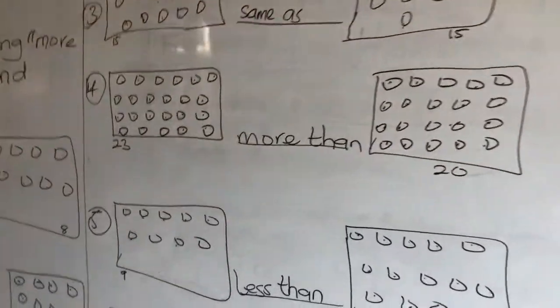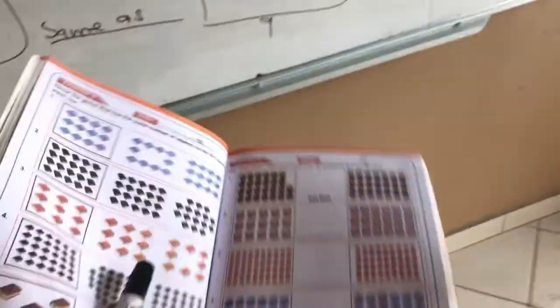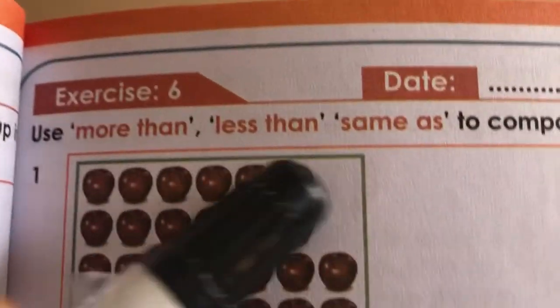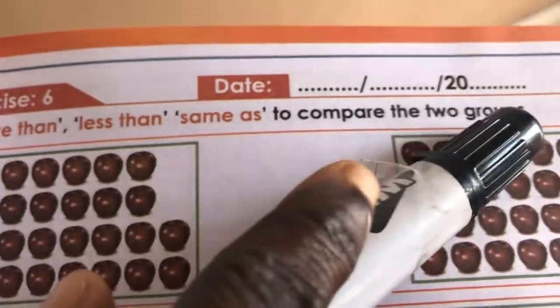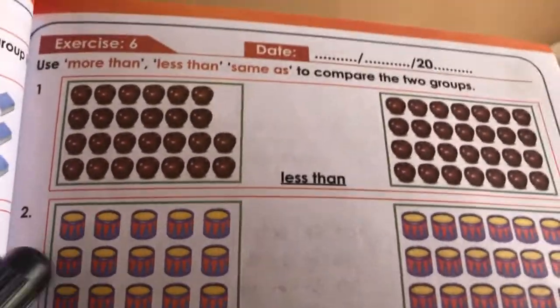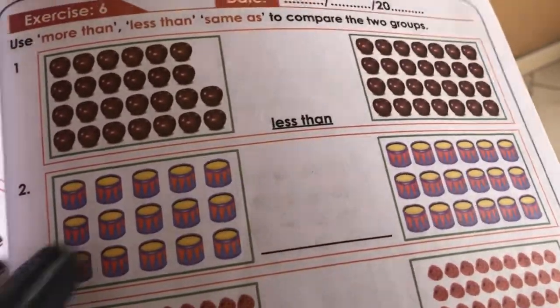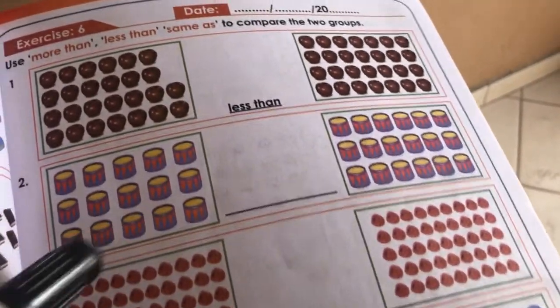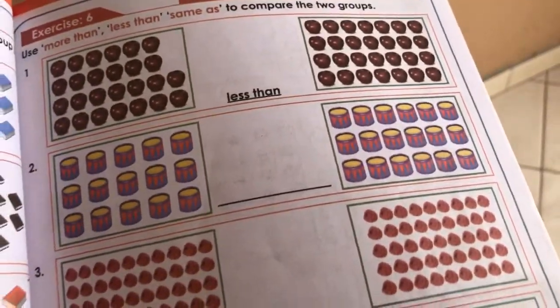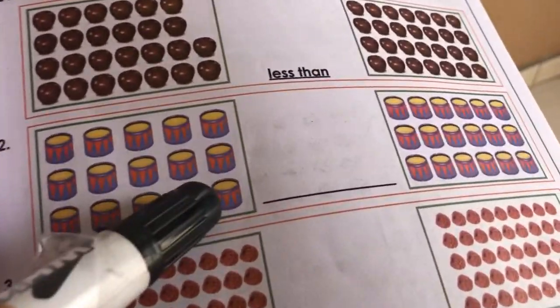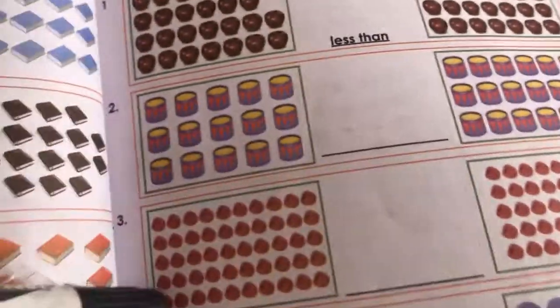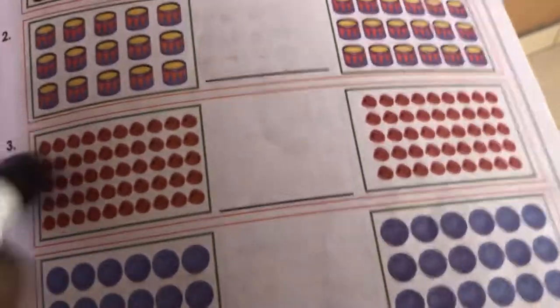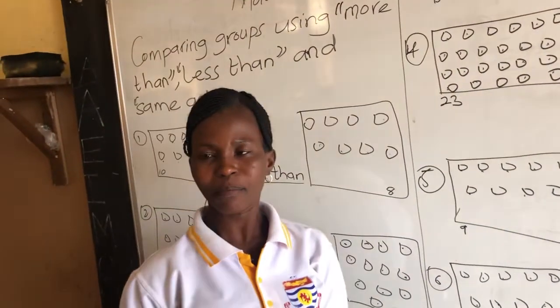Use more than, less than, or same as to compare the two groups. The first one is done for you. Kindly count and write it somewhere — you can write it by an X or anywhere — so that you know which to choose: more than, less than, or same as. Do the same for numbers two through five. We meet again. Stay safe, lovely children. Bye bye.